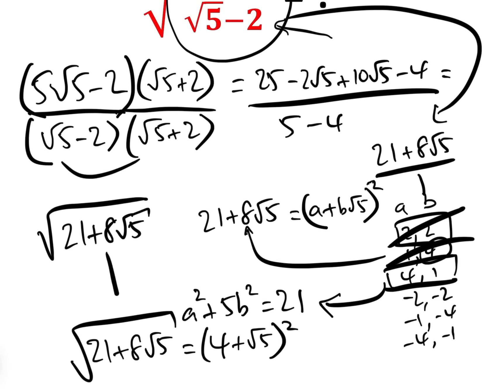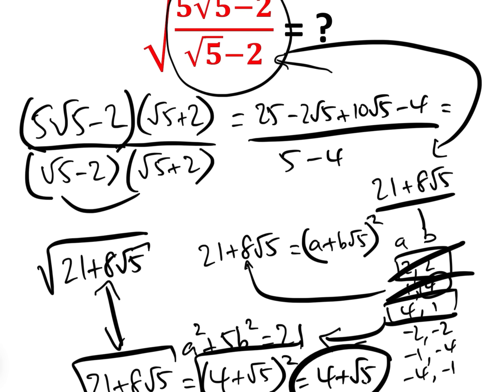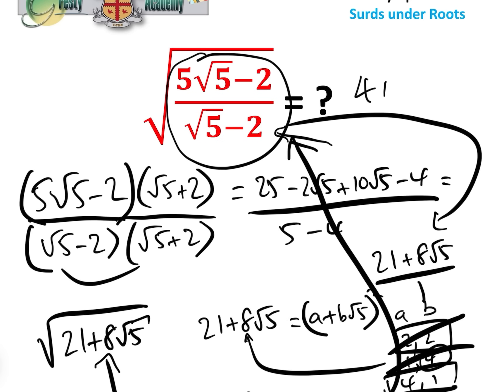And so therefore the square root of 21 add 8√5, which is what we want, is the square root of that, which equals 4 add √5, which is a simplification of that. So the answer to the question is 4 add √5.